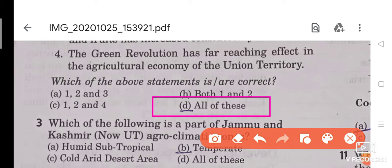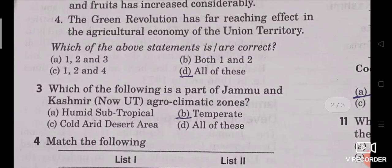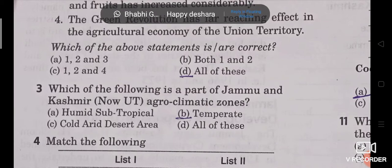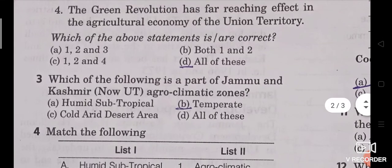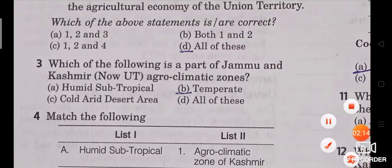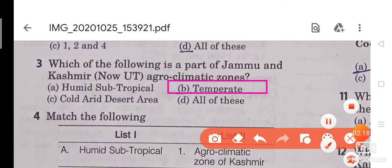Question 3: Which of the following is a part of Jammu and Kashmir union territory's agro-climatic zones? The options are: humid subtropical, temperate, cold arid desert area, and all of these. The right answer is temperate. Actually, the answer is all of these — humid subtropical, temperate, and cold arid desert area are all agro-climatic zones of Jammu and Kashmir.